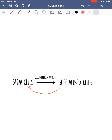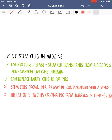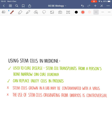You may get an exam question asking you to evaluate the use of stem cells in medicine. The advantages are that stem cells can be used to cure disease — for example, bone marrow transplants can cure diseases such as leukaemia — and they can replace faulty or damaged cells, such as replacing the insulin-producing cells in people with diabetes. The risks are that stem cells may be contaminated with a virus, which could be passed on to the patient making them more ill. And if using embryonic stem cells, there are ethical issues — many people believe human embryos shouldn't be used since each one has the potential to form a human life.